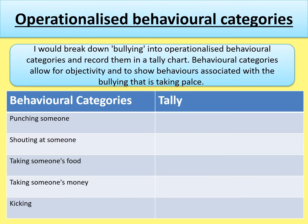The next bullet point: operationalised behavioural categories. Use that as a subheading, then explain what they are. I would break down bullying into operationalised behavioural categories and record them in a tally chart. Behavioural categories allow for objectivity and show behaviours associated with the bullying taking place — you're breaking bullying down into very specific behaviours so you can record them. Actually draw the chart. Aim to include at least three behavioural categories, and even if you leave some blank to show you would have more than three, that's good. Put tally columns on the other side — obviously don't fill in tallies since you haven't done the observation — but you're showing the examiner these are your categories and how you'll record the data.